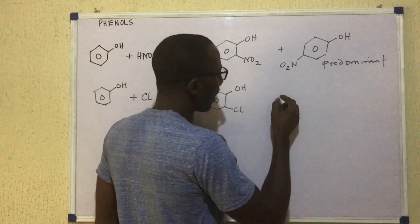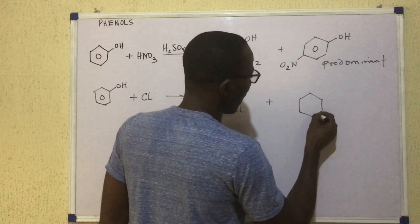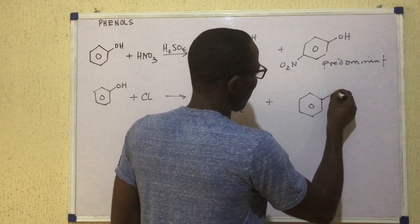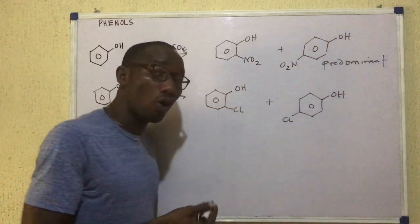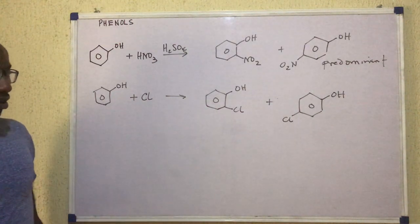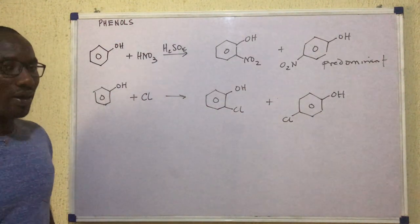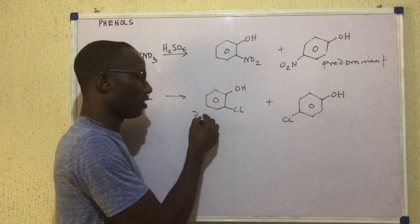And then we also have the para-product. You know we said before that when phenol reacts, you expect that you get products that are formed by substitution into the ortho or the para-positions. So in this case, we have our second product as para-chlorophenol. Now this one is the predominant product in this case.